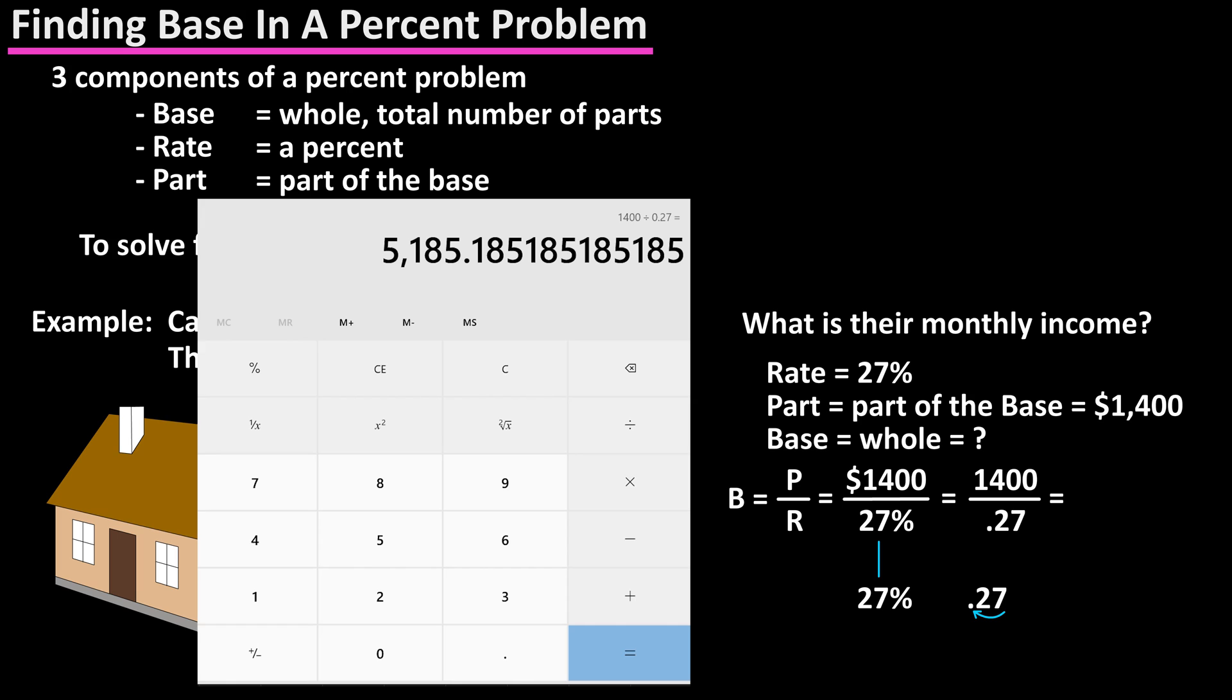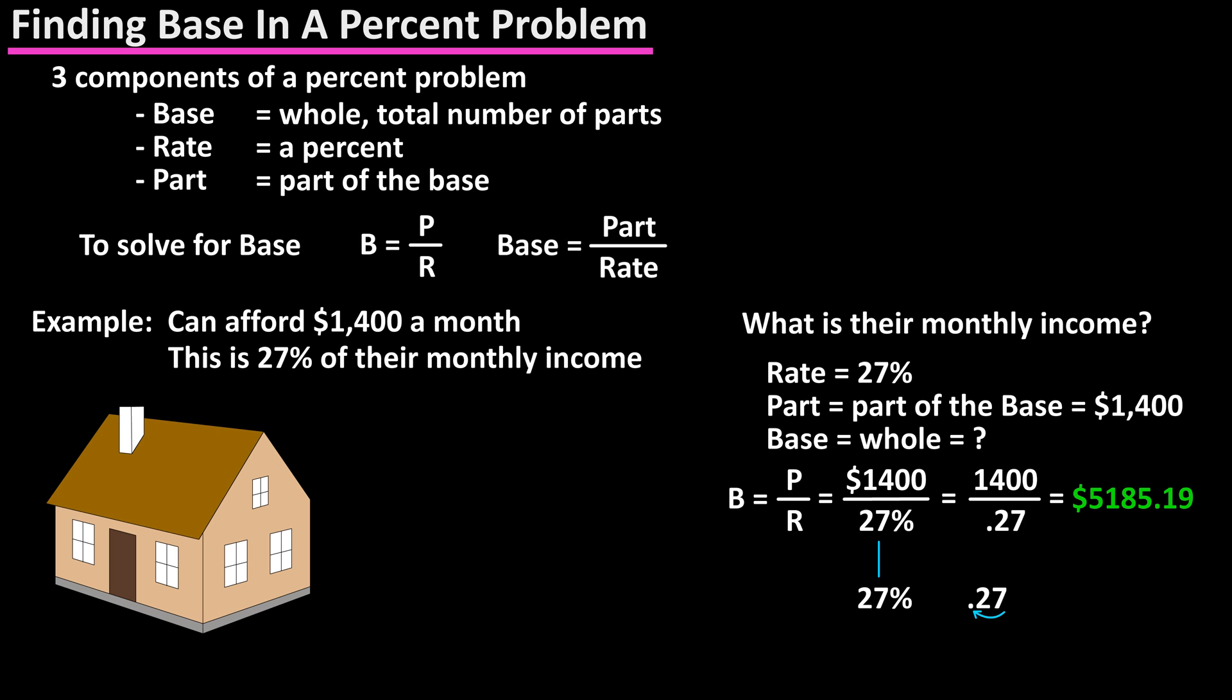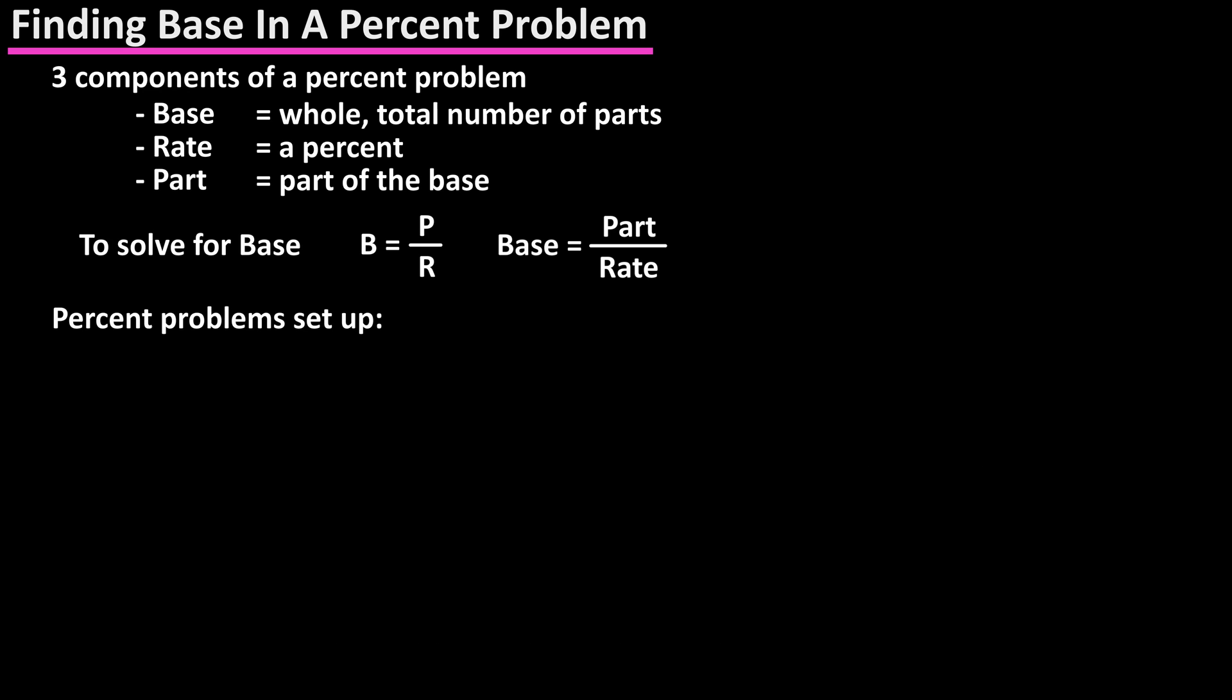Now using a calculator, we have $1,400 divided by 0.27, and our final answer is $5,185.19 rounded off, which is the total monthly income. And many times percent problems are set up like this.